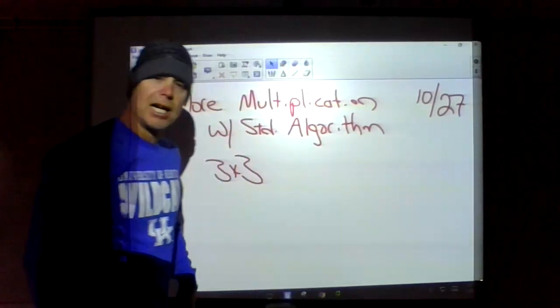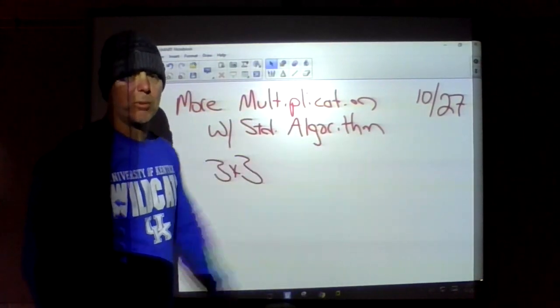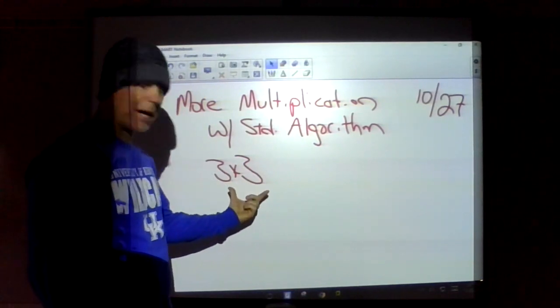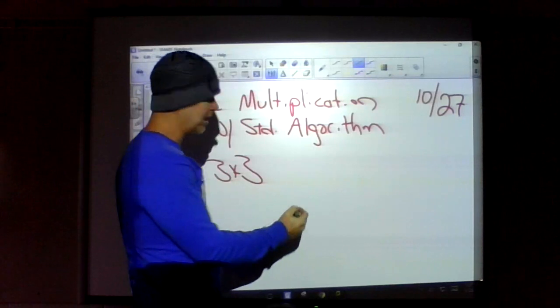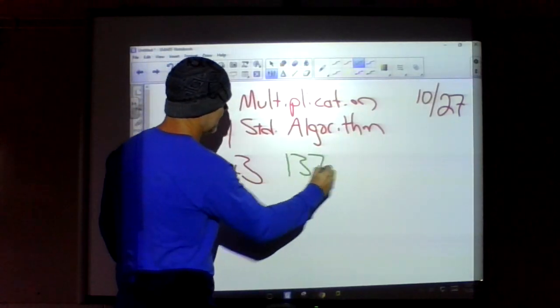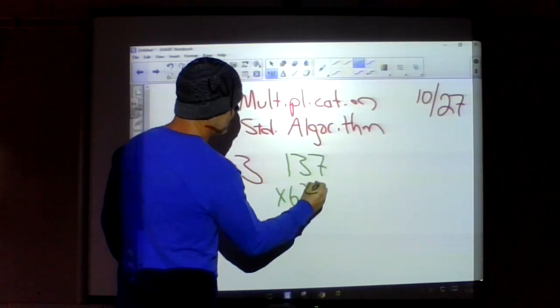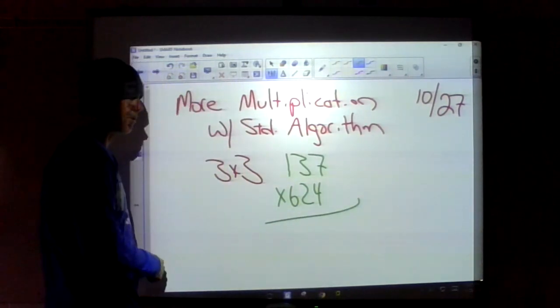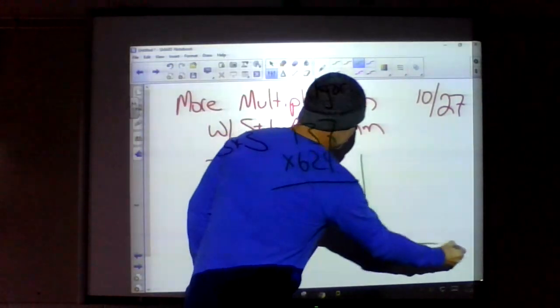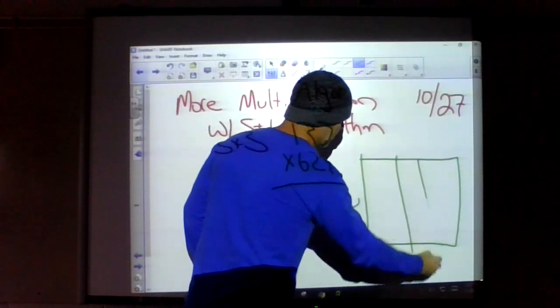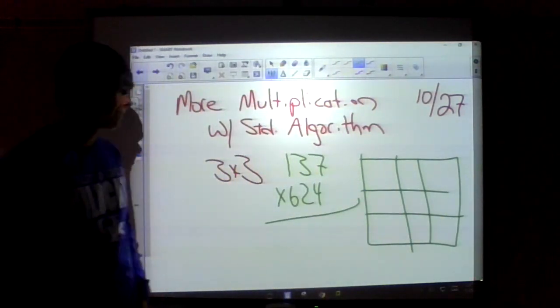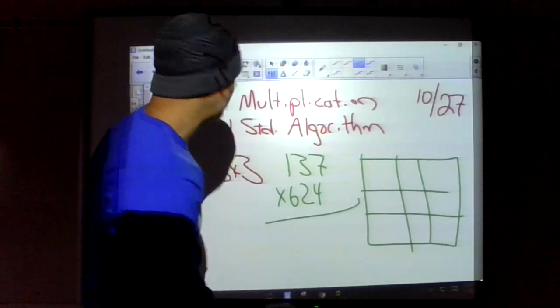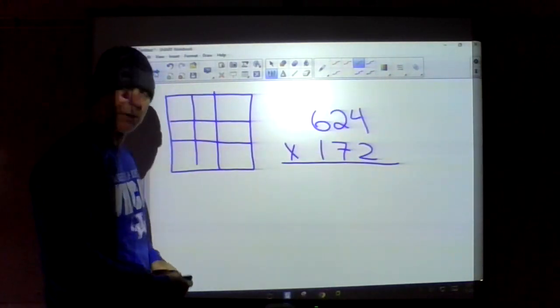Howdy, happy Tuesday. We're going to be doing some more multiplication. We are doing three by three now. Very exciting numbers such as 137 times 624. A three by three area model would have three rows and columns. We're not going to take a lot of time today but we're going to work through a couple of these.